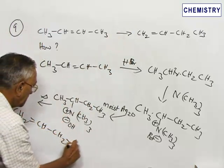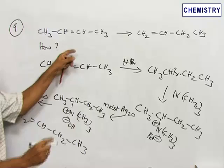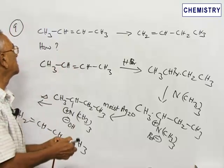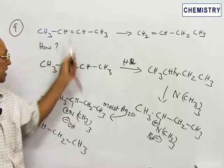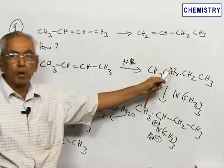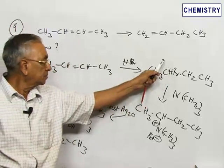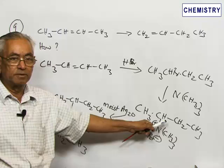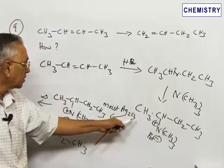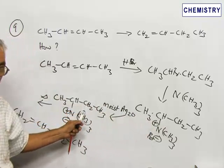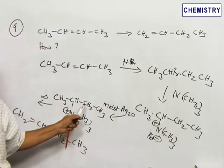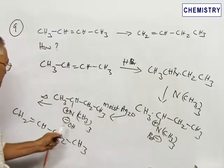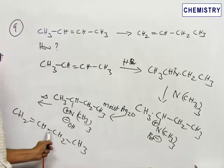So 1-butene is obtained from 2-butene by this simple procedure: 2-butene is converted to the bromide, this bromide is converted to the quaternary ammonium salt, which becomes a quaternary ammonium hydroxide. The hydroxide on heating leads to the formation of 1-butene.